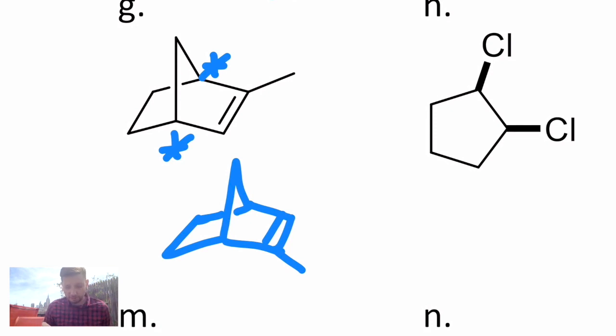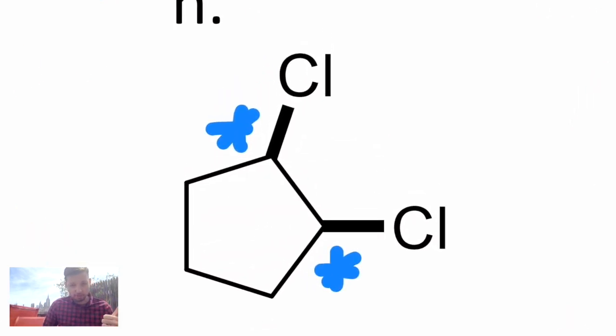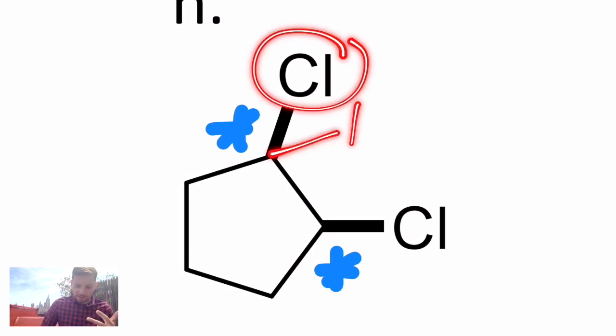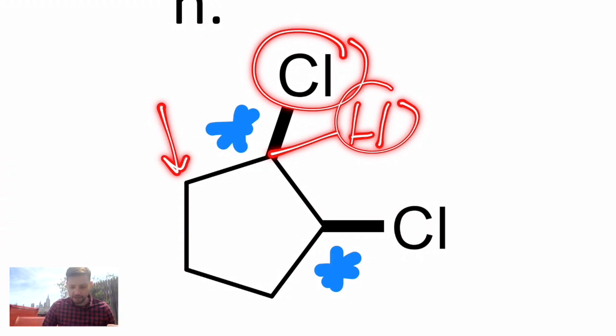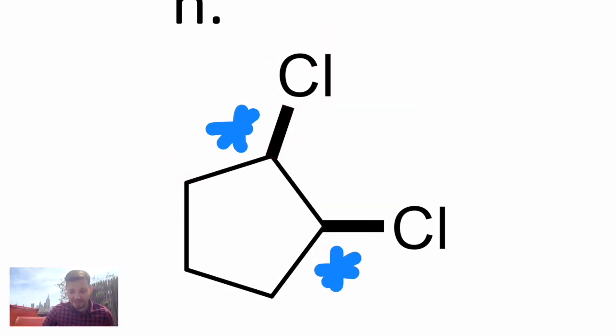H has two asymmetric carbons in it. They're the ones with the chlorines attached. If we just zoom in on one of them, hopefully you can see why. There's the chlorine, there's the hydrogen, there's the CH2 group, and then there's the CH with a chlorine on it. So again, those two carbons, they're both carbon atoms, but they are attached to different things farther out in the molecule, and they de-symmetrize that spot. Same with this carbon here. They're both asymmetric carbons.